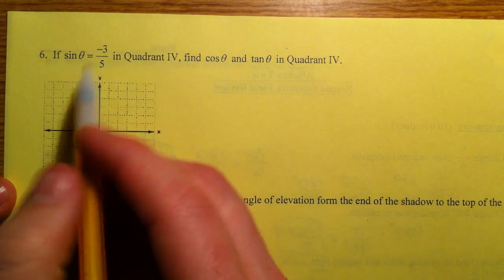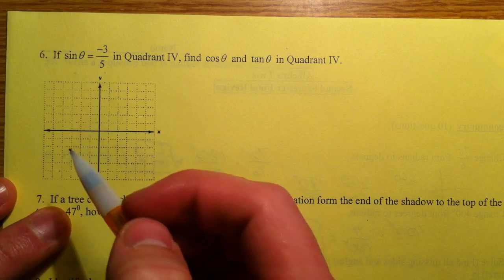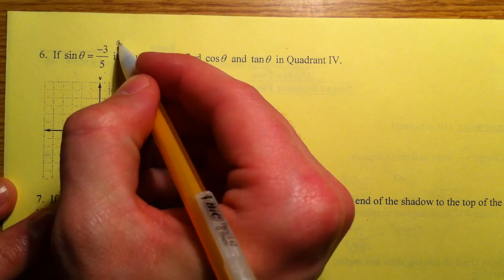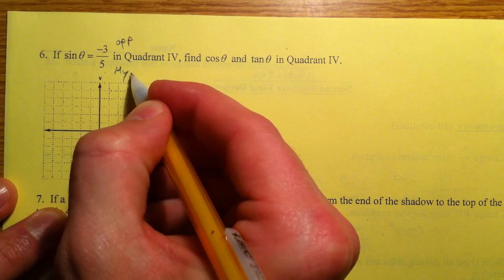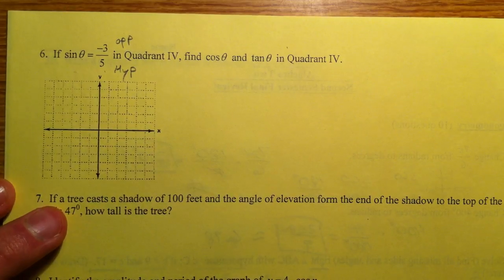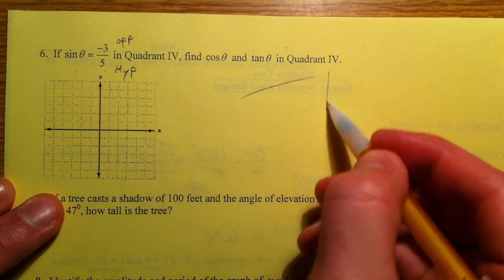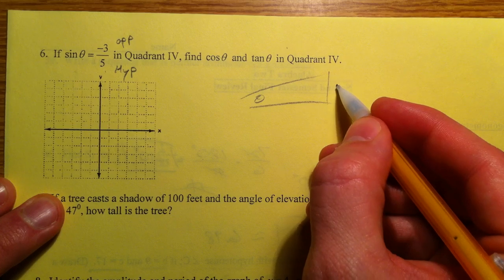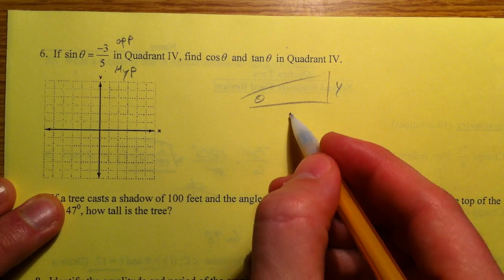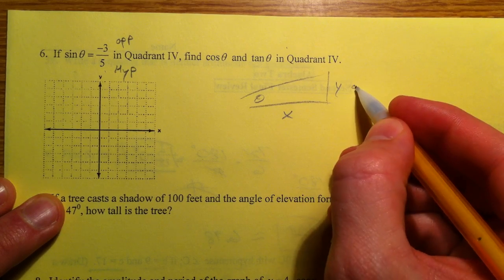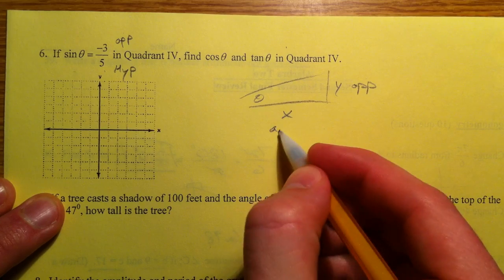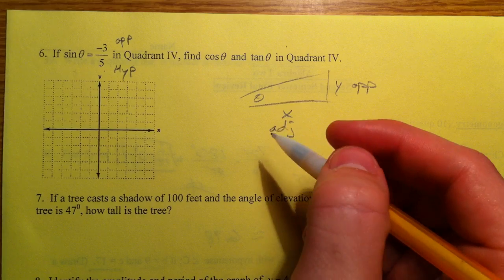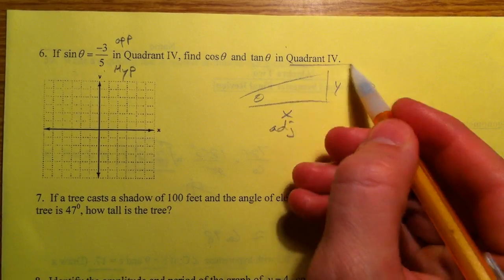Alright, so if sine of theta is negative 3 fifths, the value of the angle, and this is the opposite side and the hypotenuse side, or in terms of in a triangle, when you always make the angle with the x, the opposite is going to be the y, and the adjacent will always be the x. And so this is what we did a lot.